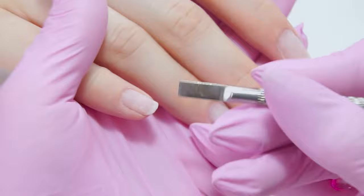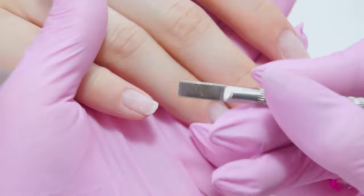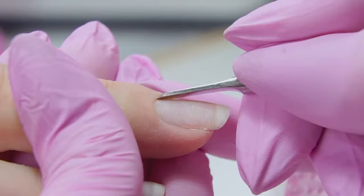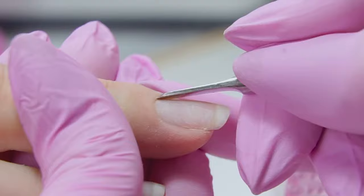After removal, start lifting the cuticle with the rounded part of the pusher. It should be placed almost level with the nail, at a small angle of 30 degrees.